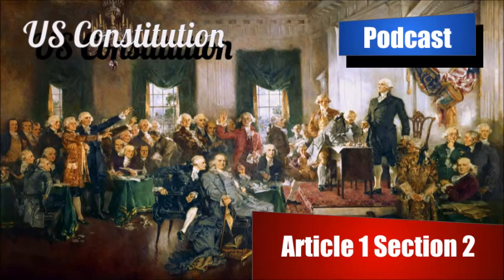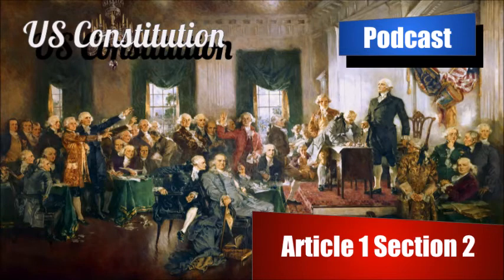Representatives and direct taxes shall be apportioned among the several states which may be included within this union, according to their respective numbers, which shall be determined by adding to the whole number of free persons, including those bound to service for a term of years, and excluding Indians not taxed, three-fifths of all other persons.